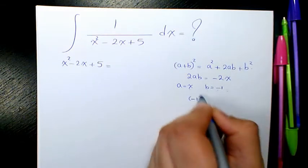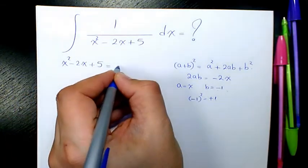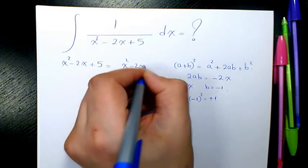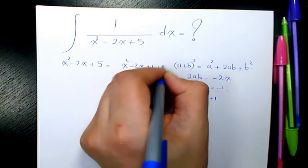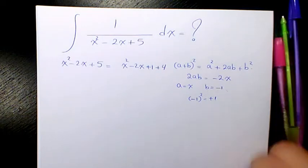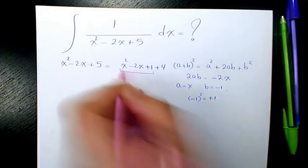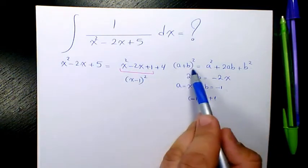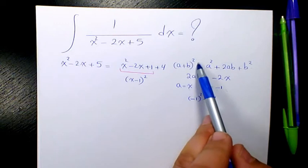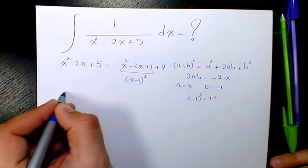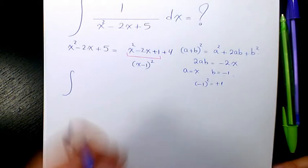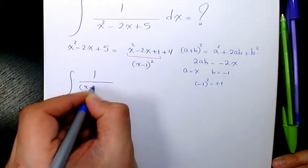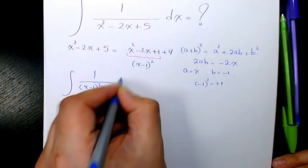So negative 1 squared is positive 1. So I'm going to write this format as x squared minus 2x plus 1 plus 4. And this part, these three terms are going to be x minus 1 to the power of 2, based on a plus b to the power of 2. So now I can change this equation into 1 over x minus 1 to the power of 2 plus 4, dx.